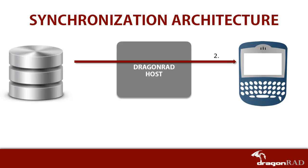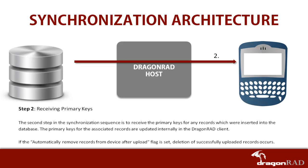The second step is the transfer of primary keys back to the Dragonrad client. This is for new records created on the device, which had been using temporary primary keys. Acknowledgement for the insert and update statements are also sent back to the mobile device. Once the primary keys are sent back to the Dragonrad client, the client will update the applicable records so that they may be referenced by their proper primary key in the future. If records are to be deleted after upload by setting the automatically remove records from device after upload flag, the deletion occurs after acknowledgement is received from the server.